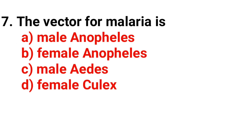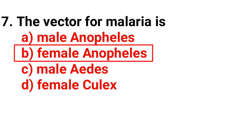Question number seven: The vector for malaria is — the answer is option B, female Anopheles mosquito.